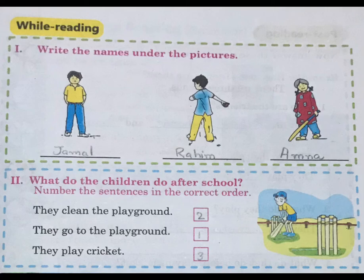Question number 2: What do the children do after school? Number the sentences in correct order. They clean the playground. Number 2: They go to the playground. Number 3: They play cricket. The correct order is 2, 1, 3. I have done it for you.